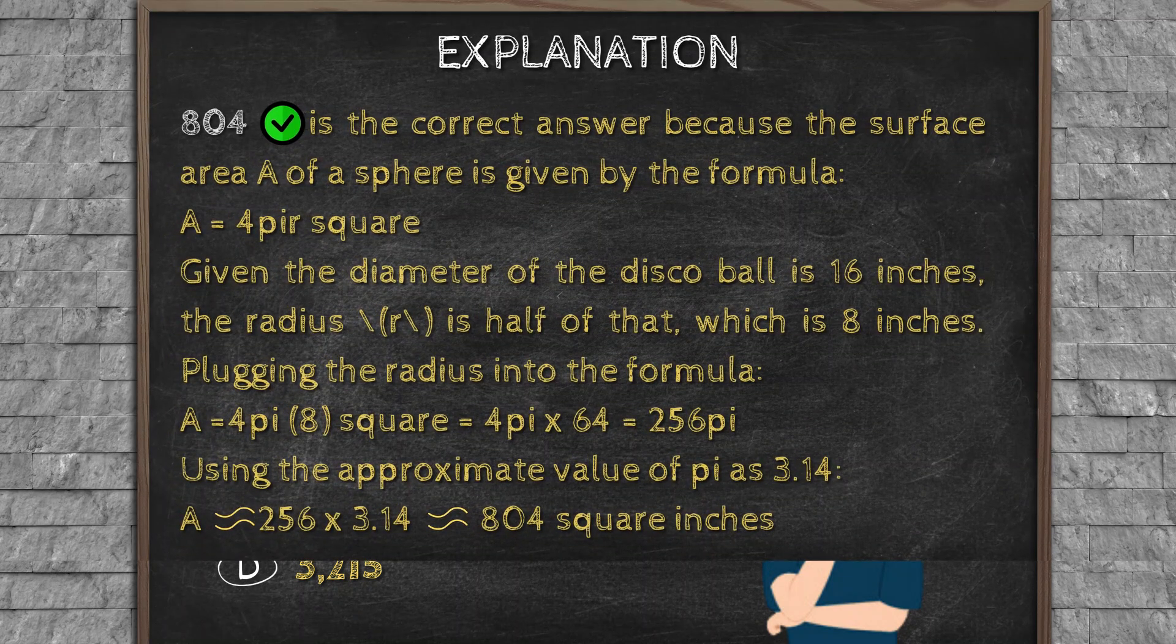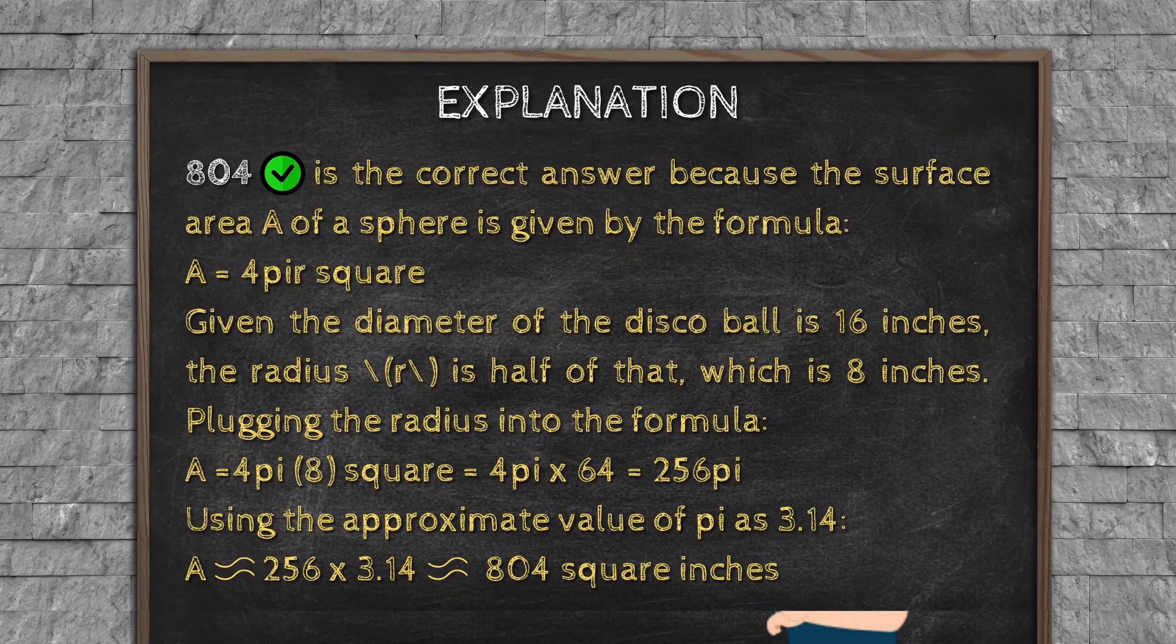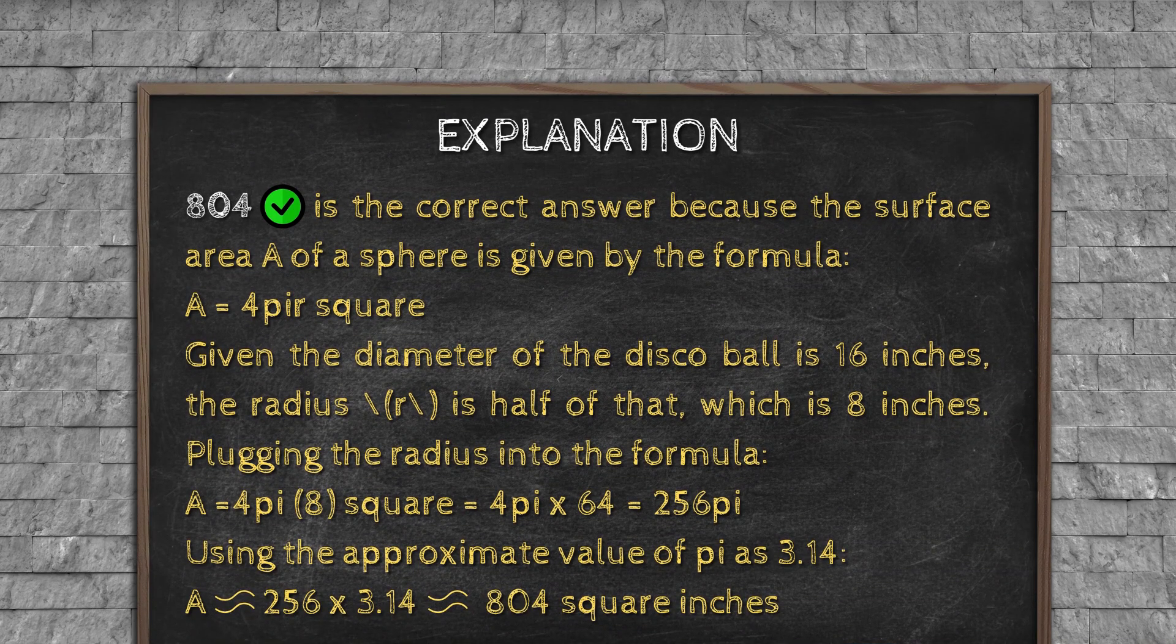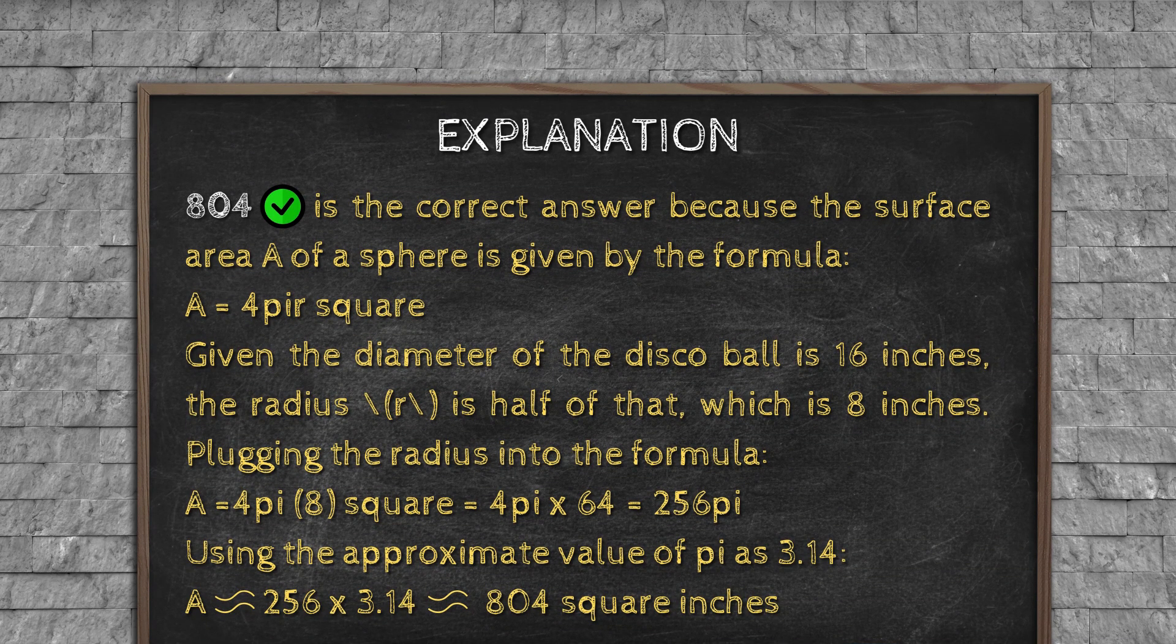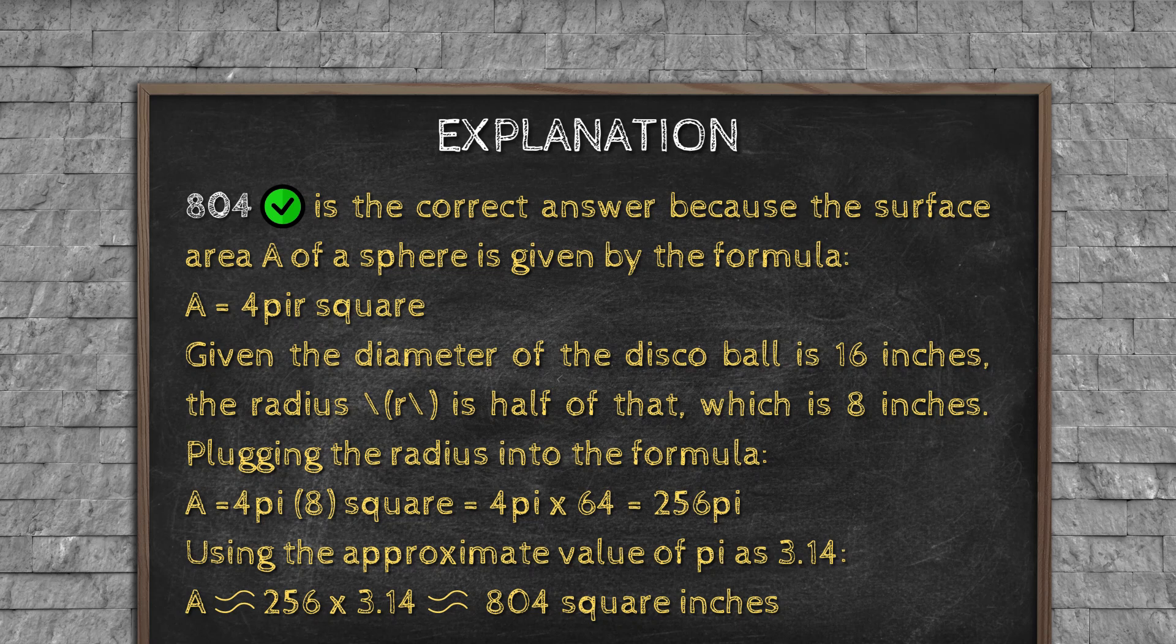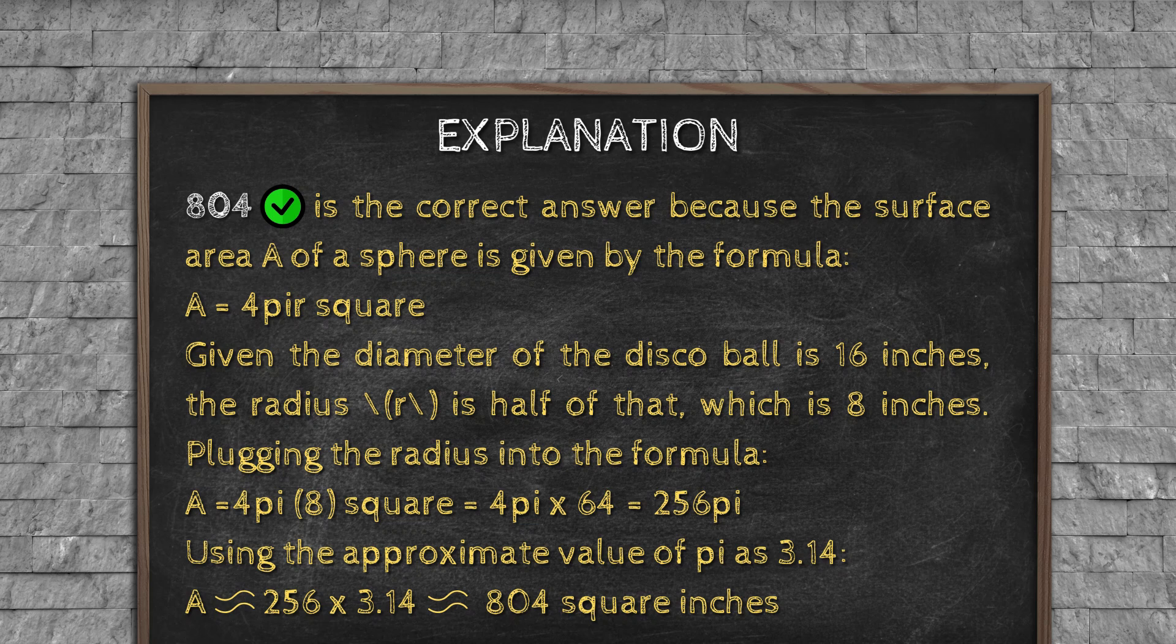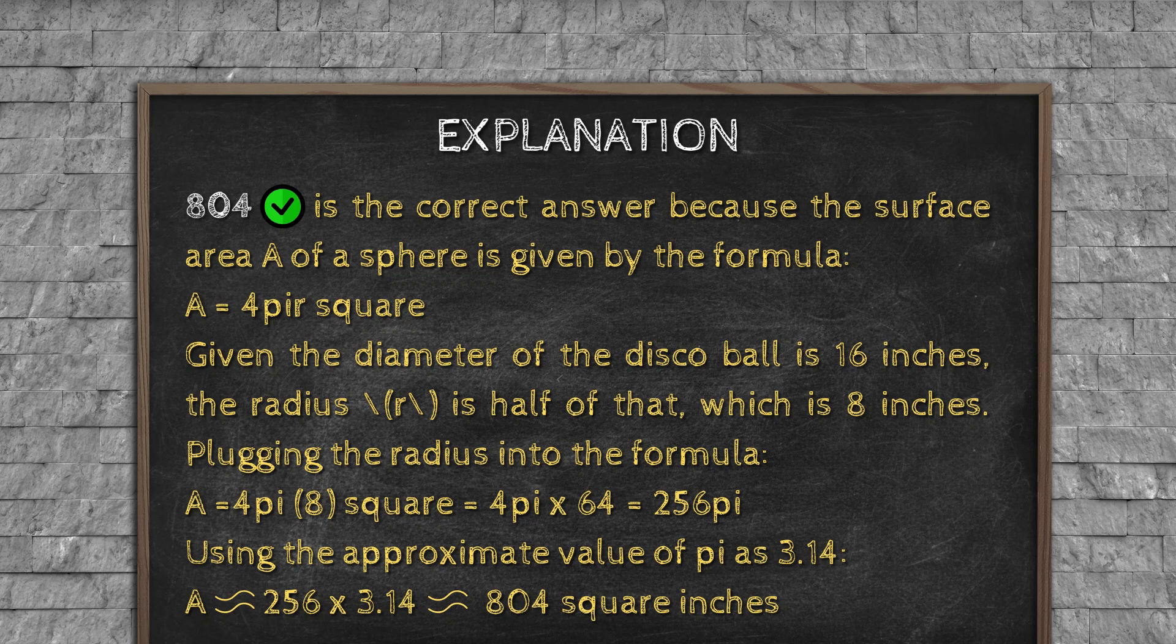Explanation: 804 is the correct answer, because the surface area A of a sphere is given by the formula A = 4πr². Given the diameter of the disco ball is 16 inches, the radius r is half of that, which is 8 inches. Plugging the radius into the formula: A = 4π(8)² = 4π × 64 = 256π. Using the approximate value of pi as 3.14, A ≈ 256 × 3.14 ≈ 804 square inches.